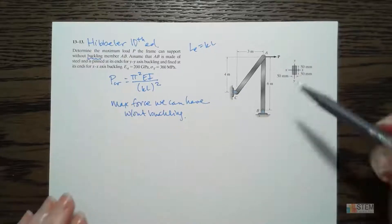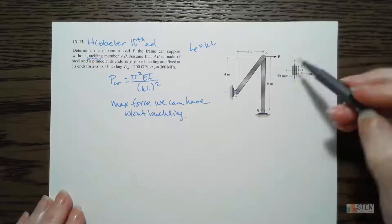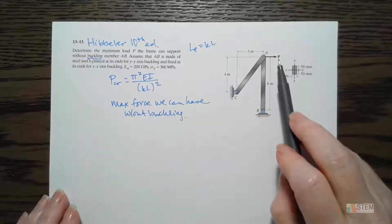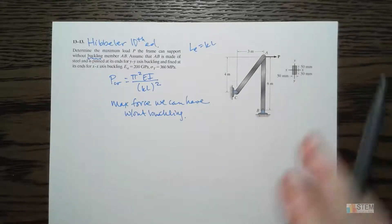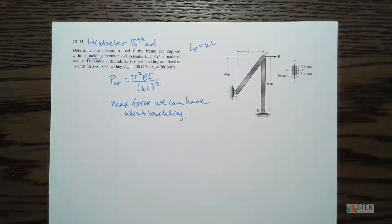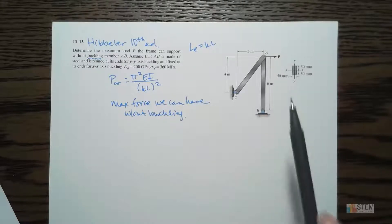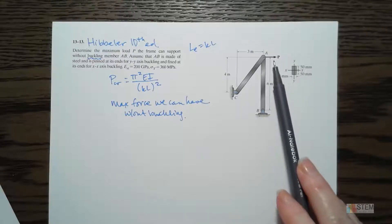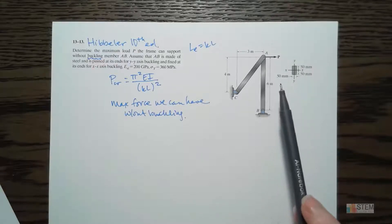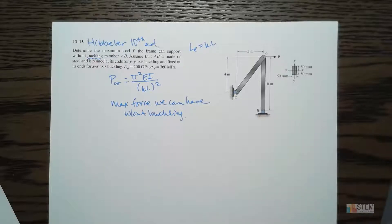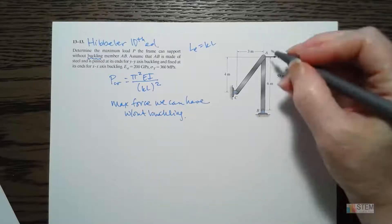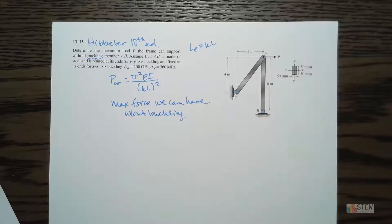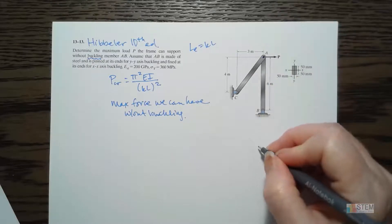In order to use this, I need to relate PCR to the force in this member and also the relationship with the applied force P. I need to relate all of those together. We can use the method of joints and analyze joint A here - let's see what that gets us.